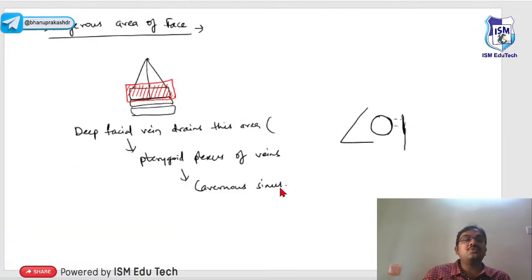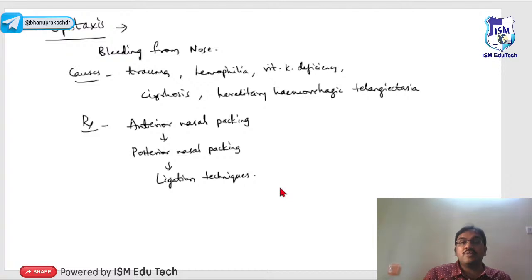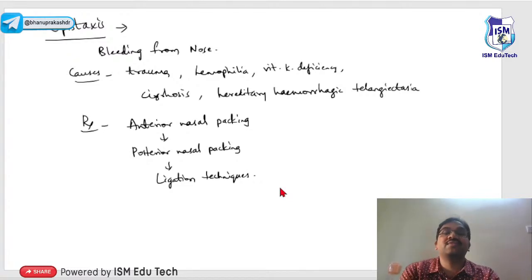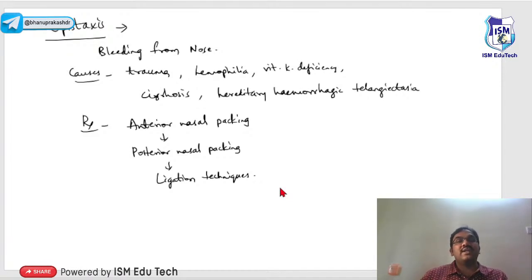The dangerous area of the face: deep facial veins drain into the pterygoid plexus, which drains into the cavernous sinus, potentially causing cavernous sinus thrombosis. Epistaxis means bleeding from the nose — it is a symptom, not a diagnosis. Causes include trauma, hemophilic disorders, coagulation factor deficiencies (Vitamin K deficiency, cirrhosis), and hereditary hemorrhagic telangiectasia (Osler-Weber-Rendu disease).